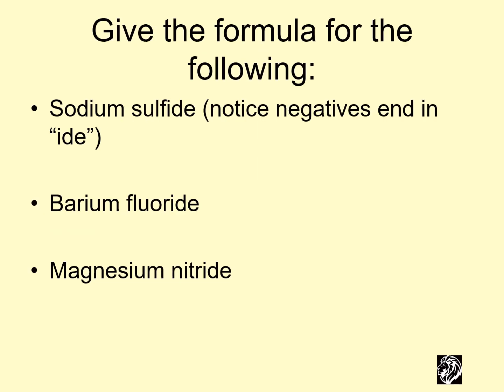So give the formula for the following. Sodium sulfide. We got sodium is Na, it's a metal. Sulfur is S. Sodium is +1. If you look at the periodic table, it's got that +1 charge. Sulfide is -2. And so we'd need two Nas and one S to equal zero.